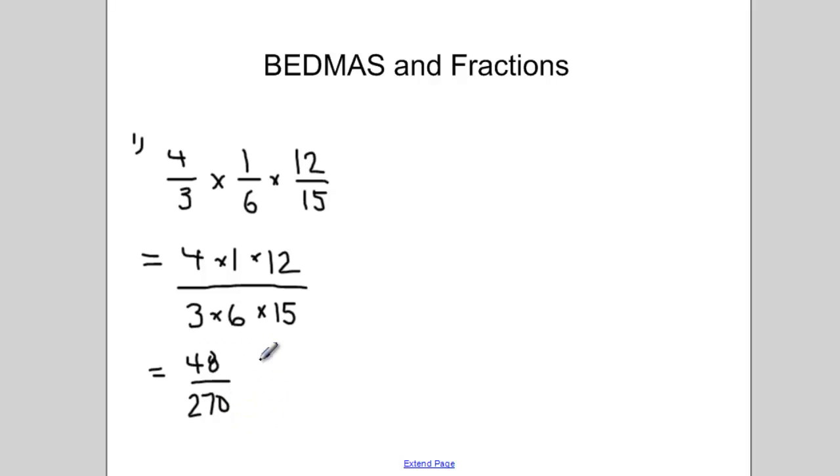This is a big fraction now to try and reduce. So we could look for some numbers that might divide evenly into the top and the bottom. I think we could probably divide the top and bottom by 6. And when I do that I'm left with 8 over 45.